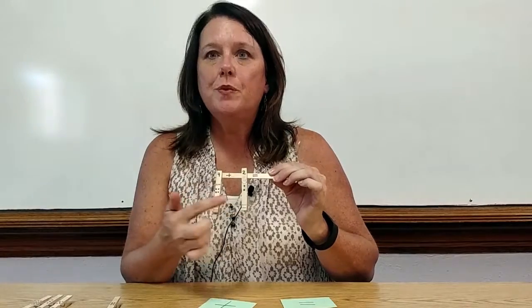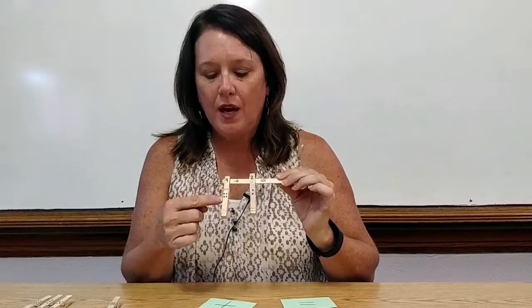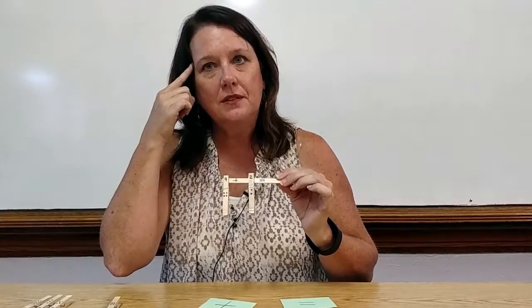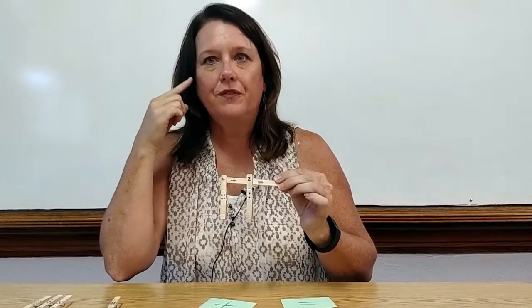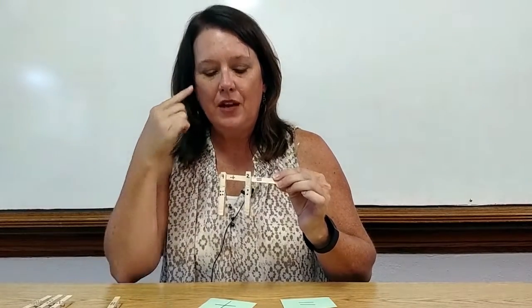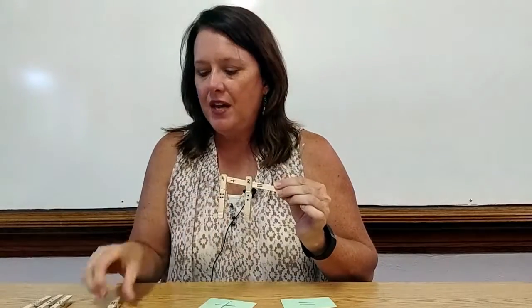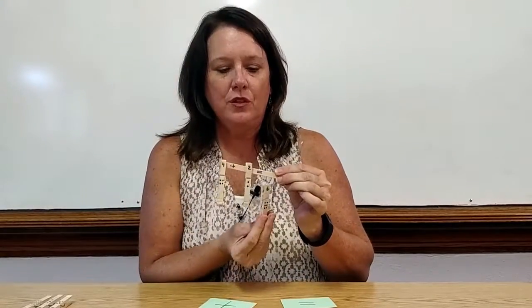Which clothespin has the most dots? That's right, the four. So put four in your head. What number's in your head? Four. Now count on the dots. Four, five, six. That is right, boys and girls. Four plus two equals six. I now have six candy bars.